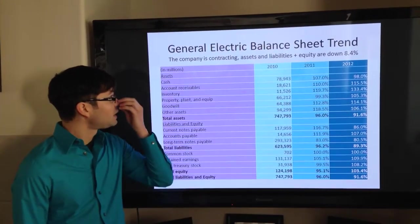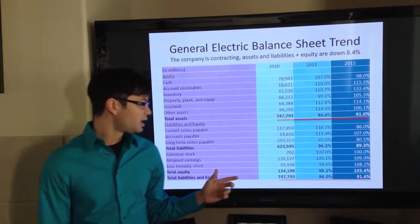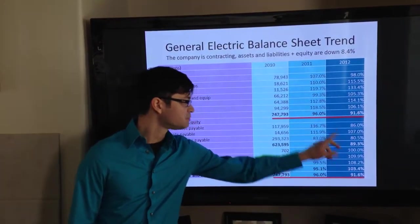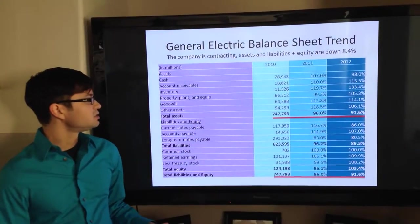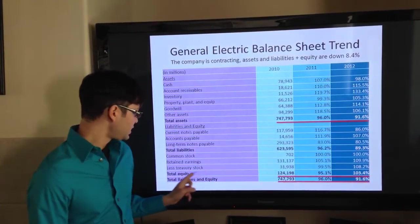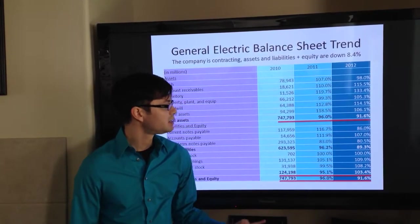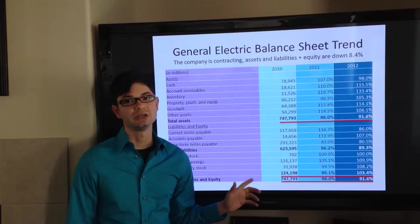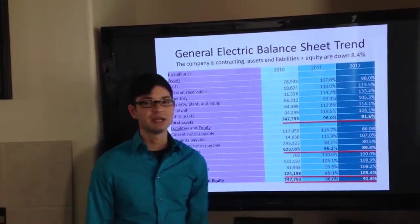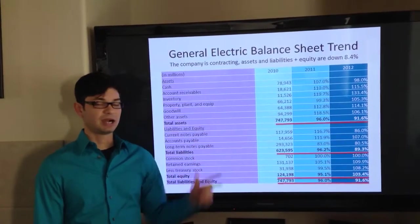The General Electric Balance Sheet shows that the company in whole is actually contracting. Its total liabilities and equity actually decreased to 91.6% as well as the assets as you can see there in 2012. They actually had a total equity increase of 3.4% from 2010 numbers and that was primarily due to retained earnings. The total liabilities actually showed a decline of 11.3% which actually probably indicates that they're trying to pay a lot of their liabilities with their assets.